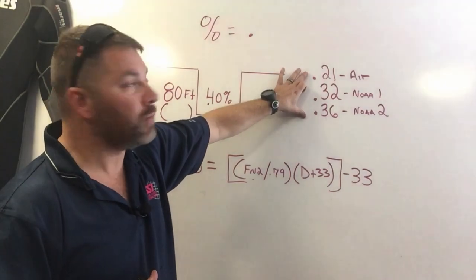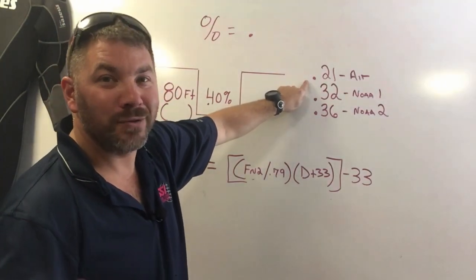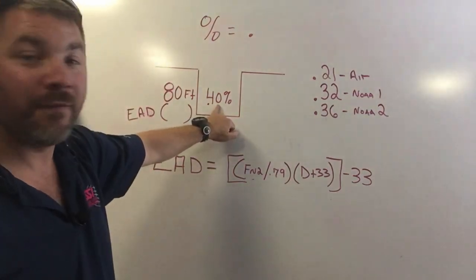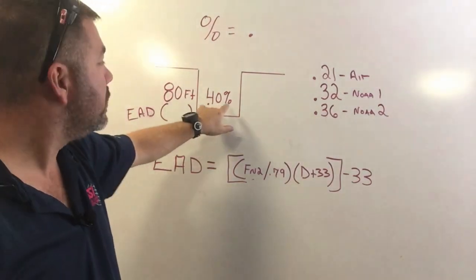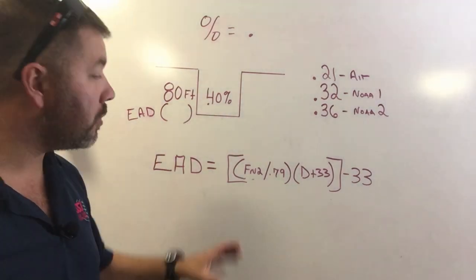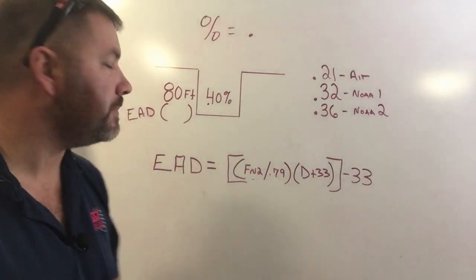Over here I've kind of got it wrote one way where it's 21% but I use decimal, 32% I use decimal, 36% I use decimal, but here I got 40% with a percentage sign. The percentage means the exact same thing as the decimal and that's going to be very important when you plug in the numbers into the equation.